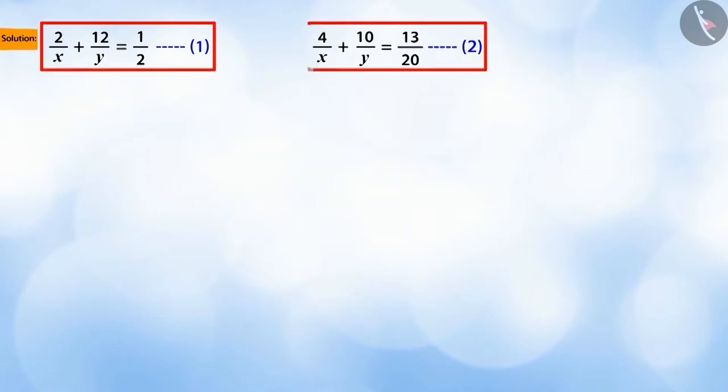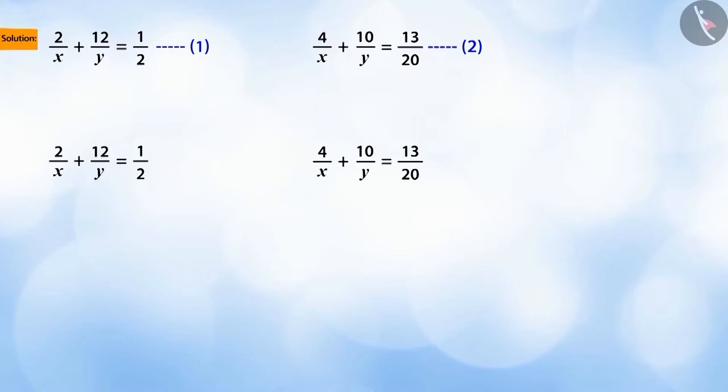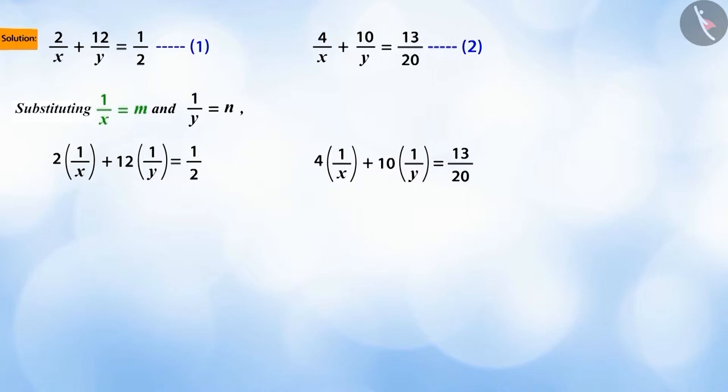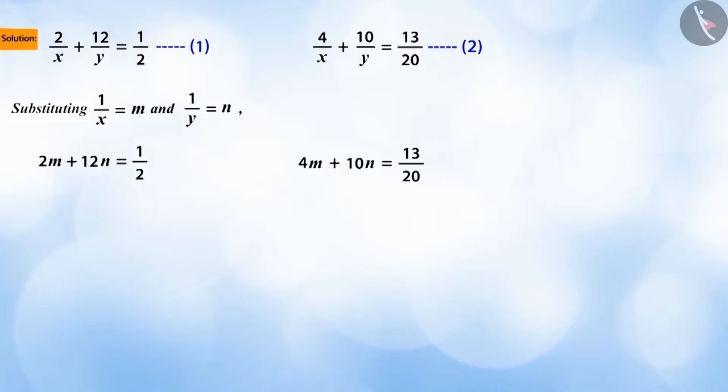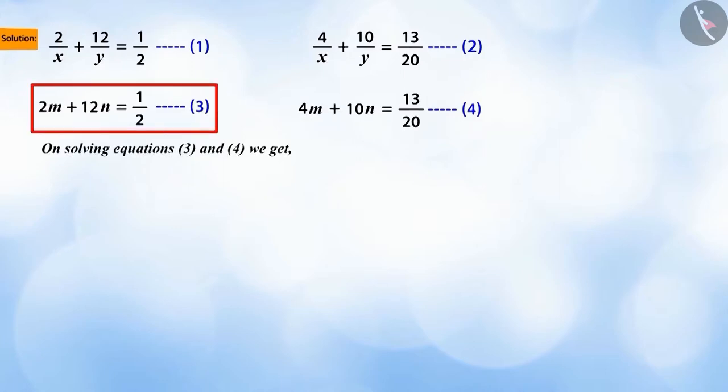You can see that equations 1 and 2 are not linear equations. If we write equations 1 and 2 in this form, replace 1 by x by m and 1 by y by n in both the equations, then we get equations 3 and 4. By solving equations 3 and 4, we get the value of m as 1 by 10 and n as 1 by 40.